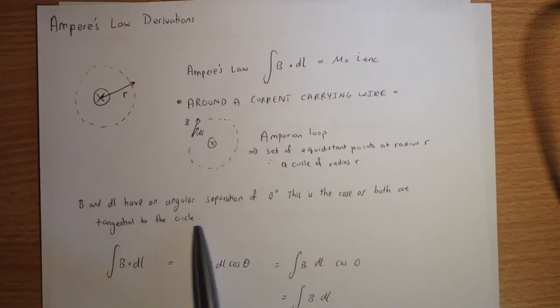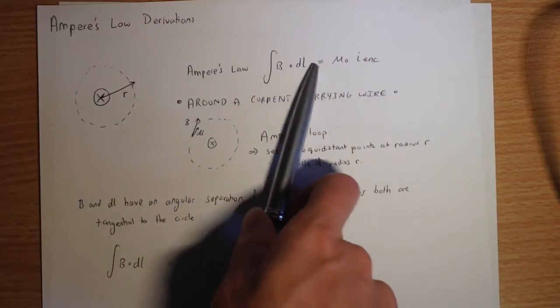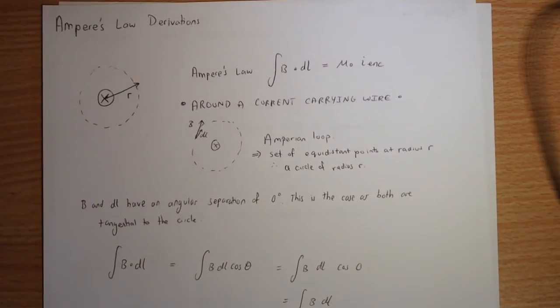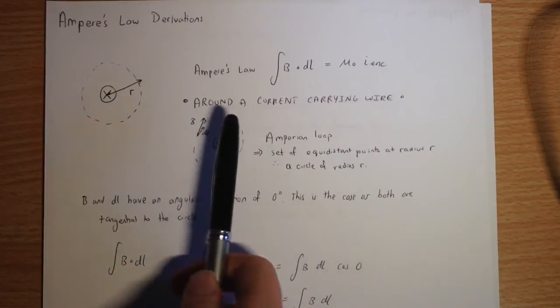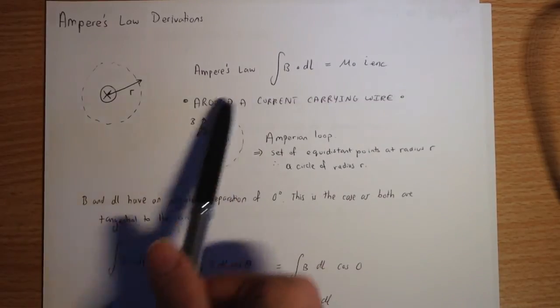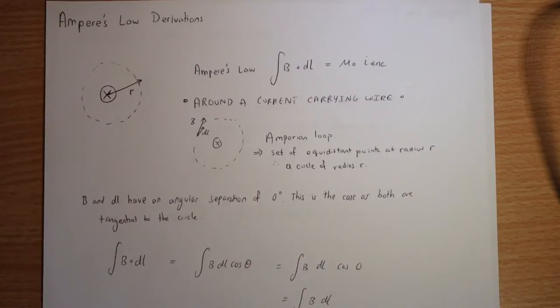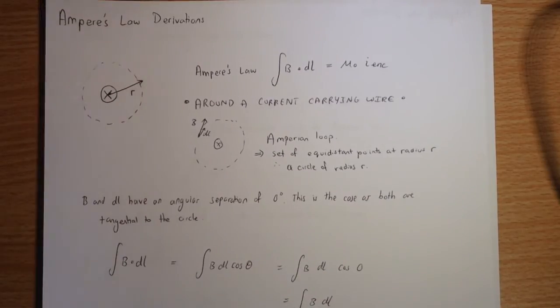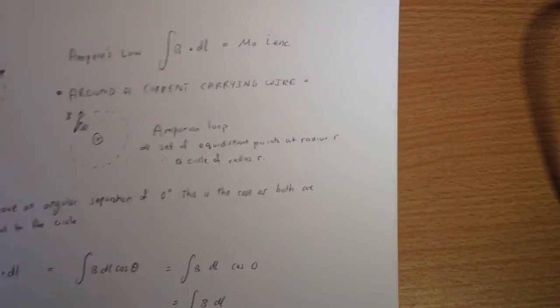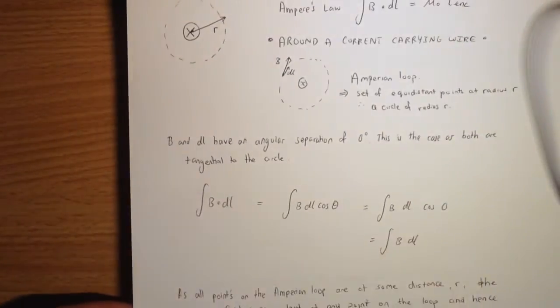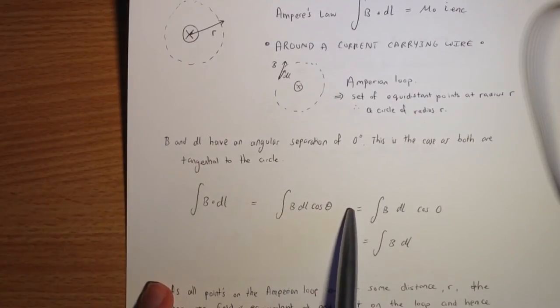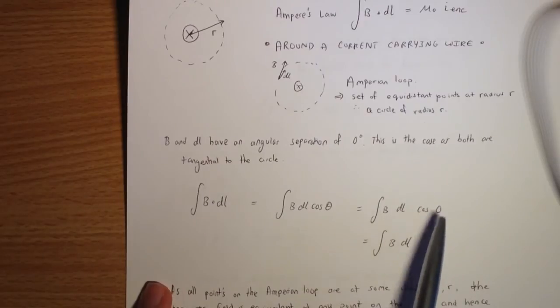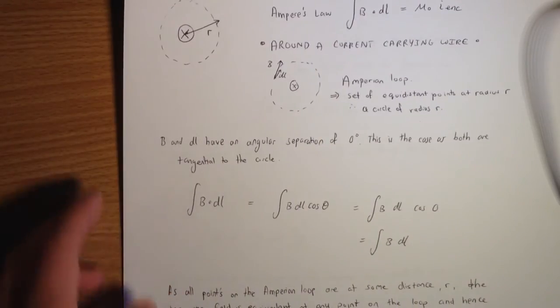So now what we need to do is consider the angle separation between b and dl, because we've got a cross product in the integral. So of course, we remember a cross product of b dot dl is simply equal to b dl cos theta. So by considering the angle of separation, we know that both are going to be tangential to the circle at any given instant, and consequently, we end up with both of them having an angle separation of 0 degrees between the two. So if I just move this here, we can then hence write b dl cos theta, and then because the cos of 0 is equal to 1, we just end up with the integral of b dl.